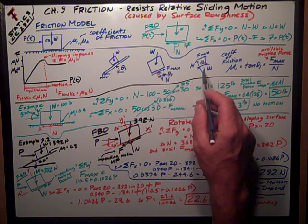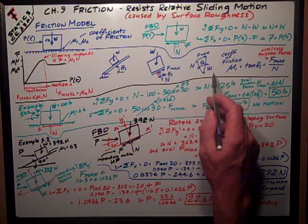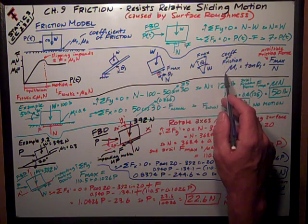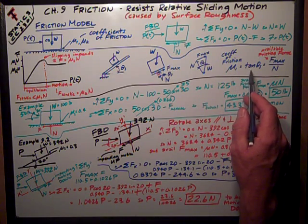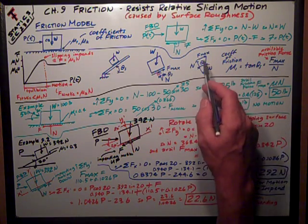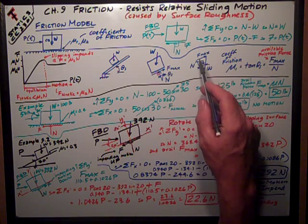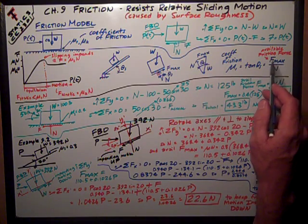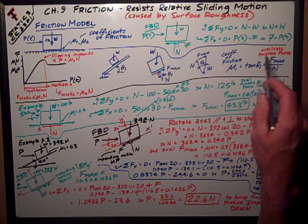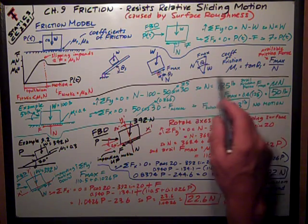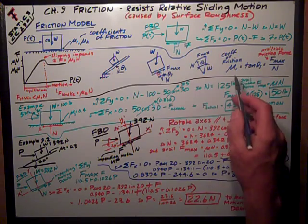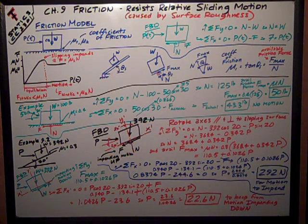So we do a little quick vector math and we see the coefficient of friction, mu sub s, is equal to the tangent of that angle — because by the vector math, that's the maximum available friction force divided by N. So mu sub s is just the tangent of that angle.